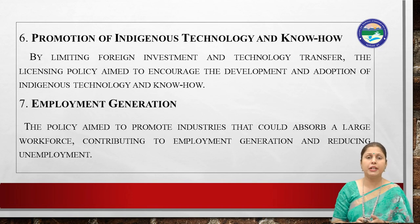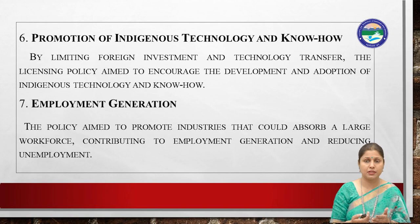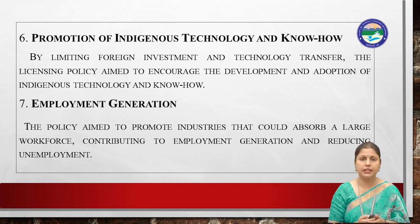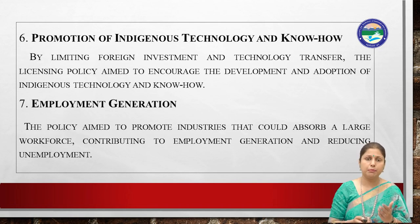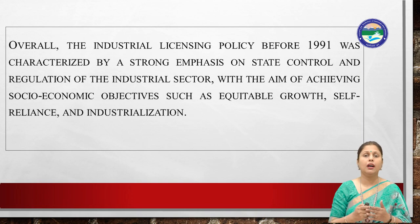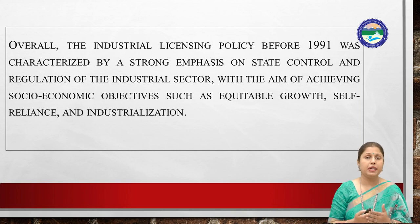The next objective was employment generation in India. Industries that absorbed more workforce, provided employment, and reduced unemployment were given licenses. Overall, the licensing policy aimed to regulate industries, promote equitable growth, self-reliance, and industrialization in India.